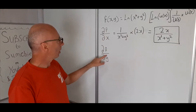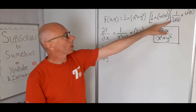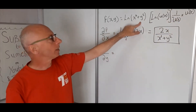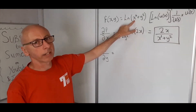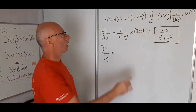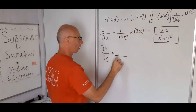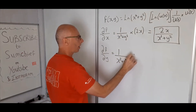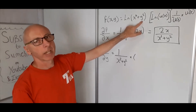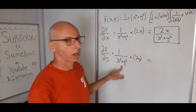Now we're going to find the partial with respect to y. Same thing as before — 1 over u of x times the derivative of u of x, but this time with respect to y. The x squared is not dependent on y, so we treat that as a constant. So we write 1 over x squared plus y squared, multiplied by the derivative with respect to y: the x squared term becomes 0, and y squared gives us 2y. That leaves us with 2y over x squared plus y squared.